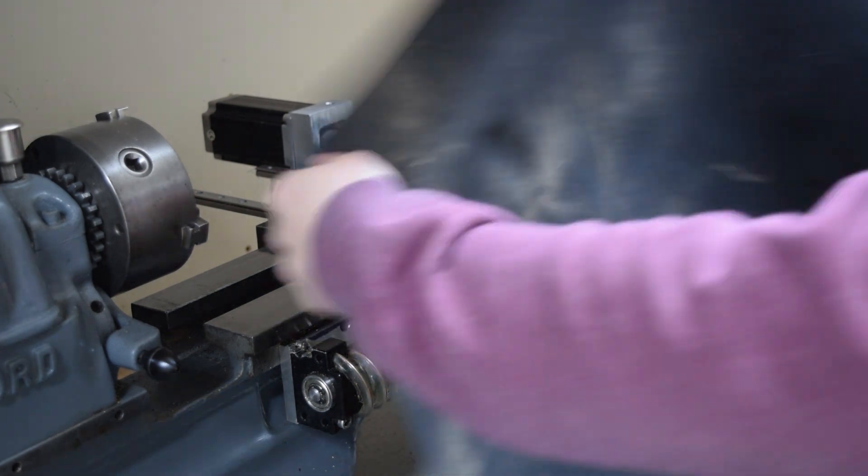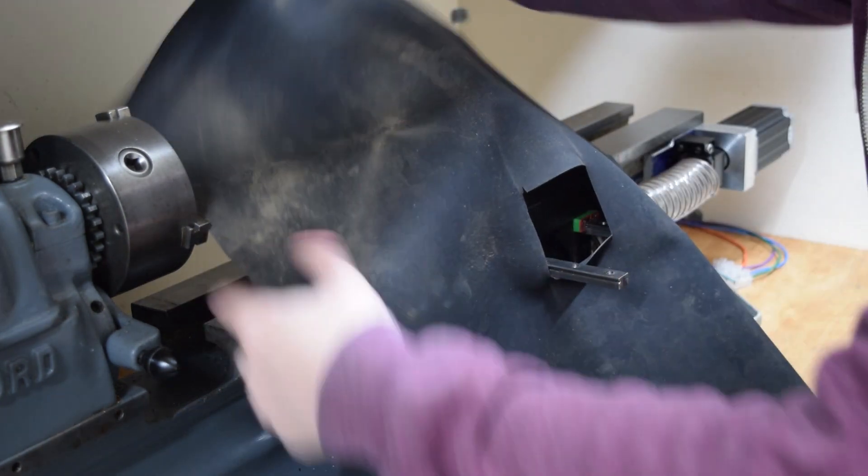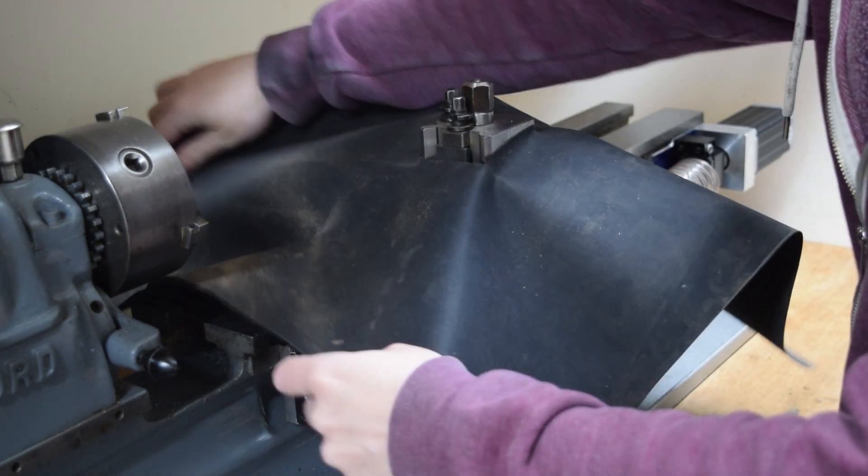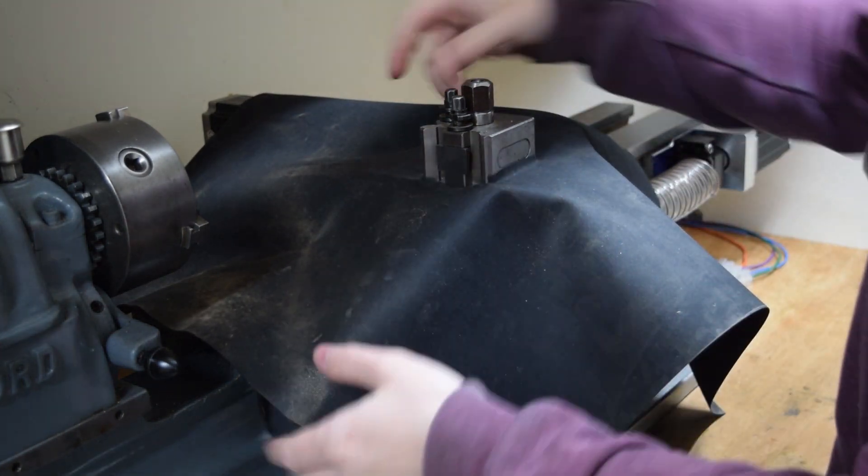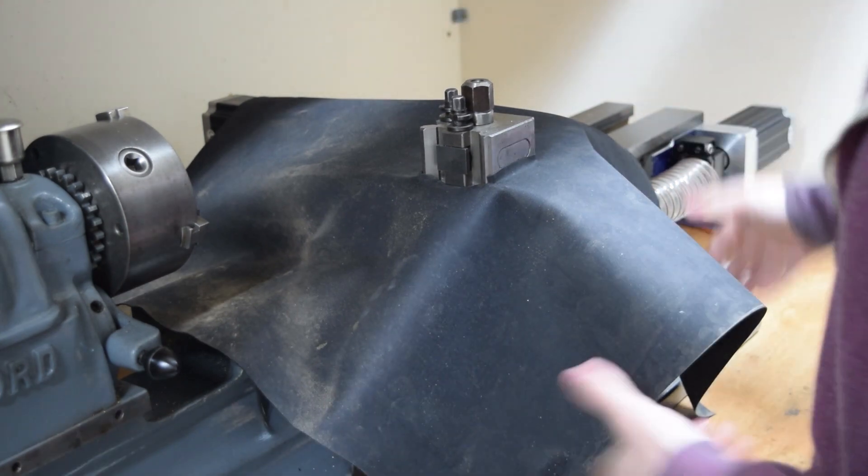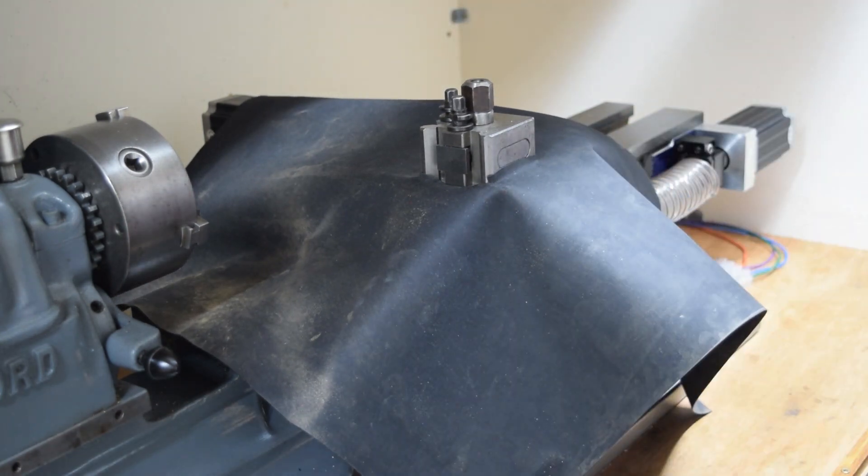I made a chip cover out of some leftover pond liner. It's a rubber material and it's quite hard wearing. It's definitely not the prettiest thing, but it does work. It keeps any chips out of the ball screws and electronics.